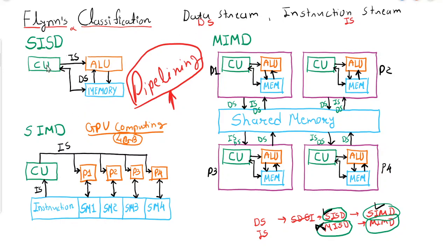To summarize Flynn's classification: SISD has one control unit, one ALU, and one memory. SIMD has one control unit and multiple processing units sharing memory, with the same instruction applied to all. MIMD has multiple processors each with their own instruction stream and data stream, connected to a shared memory. Pipelining does not fit into any of these categories. In the next video we will look at parallel execution using a single processor or uniprocessor architecture. Thank you.